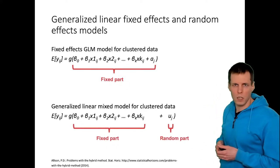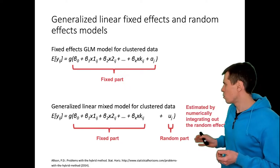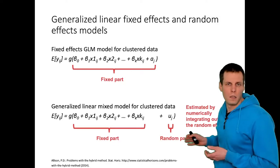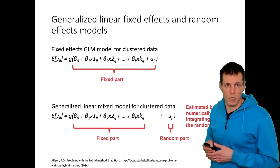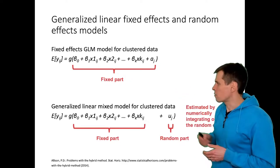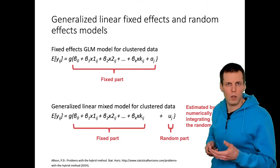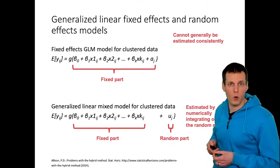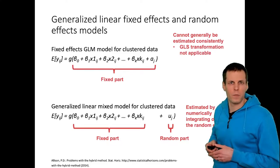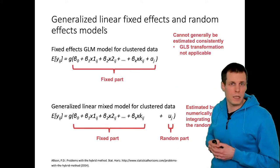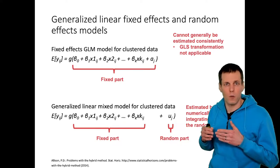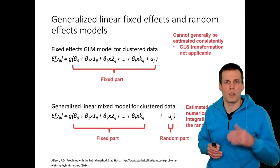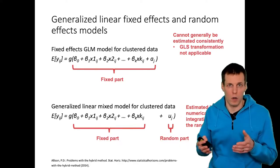In non-linear models, estimation works very differently. The generalized linear mixed model for cluster data is estimated by numerical integration — we integrate out the random effect to calculate the likelihood for the model and data, then maximize that likelihood to produce maximum likelihood estimates. This is more challenging to estimate. In regression or linear model contexts, we have three main strategies for estimating this model, and none of them work in the non-linear case. Let's look at the transformation first: the GLS transformation for the fixed effects model calculates the group or cluster mean of each variable, then subtracts those means from observations.